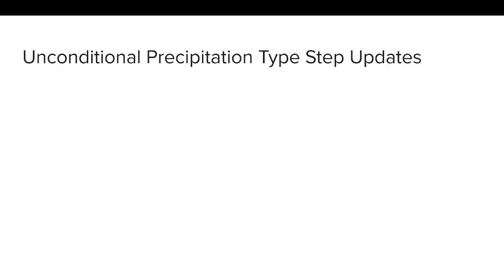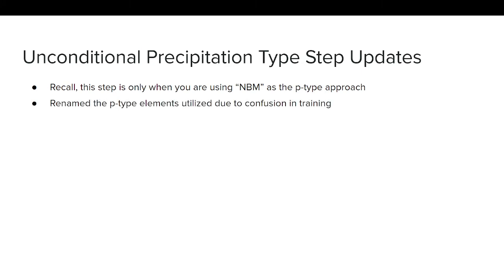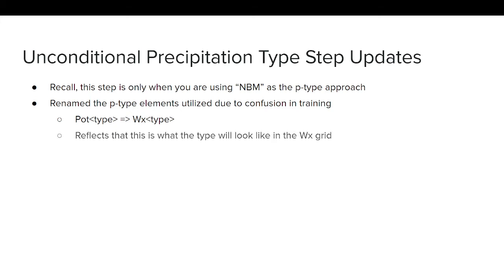Let me talk about the unconditional precipitation type step updates. This step is only applicable when using MBM as a p-type approach. We renamed the p-type elements to reduce confusion in training. Specifically, the POT type is now called the WX type — reflecting that this is the type you will see in the weather grid — which helps reduce confusion between probability of precipitation type, probability of thunder, and probability of precipitation.